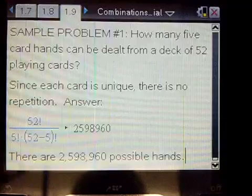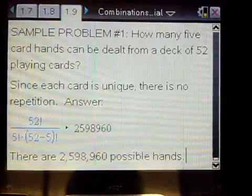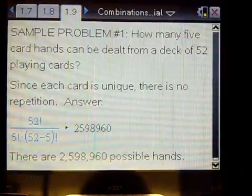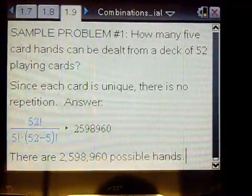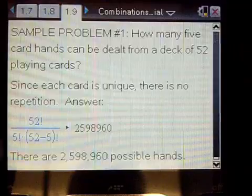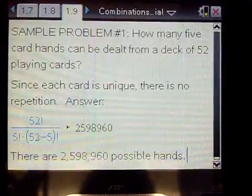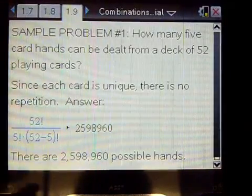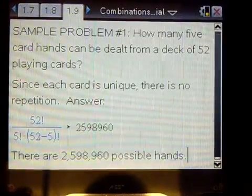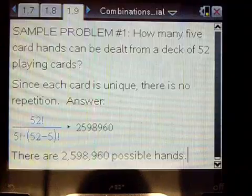Let's take a look at some sample problems. How many five card hands can be dealt from a standard deck of 52 playing cards? We know in a standard deck of playing cards, no card repeats. Every card is unique. So, we don't have to worry about repetition here. We're just choosing five cards out of 52 playing cards, and we don't care about order. So, the first formula would apply, 52 factorial over 5 factorial times 52 minus 5 factorial. And it turns out there are 2,598,960 possible hands.